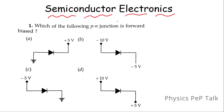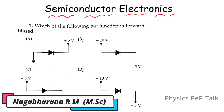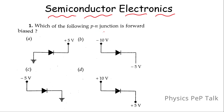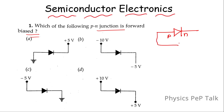Hello students. In this video we will talk about P-N junction diode MCQs. This is the first question of P-N junction diode. This is the symbol of P-N junction diode — this is P and this is N-side. If P-side is connected to the positive terminal and N-side is connected to the negative terminal, then such type of biasing is called forward biasing.